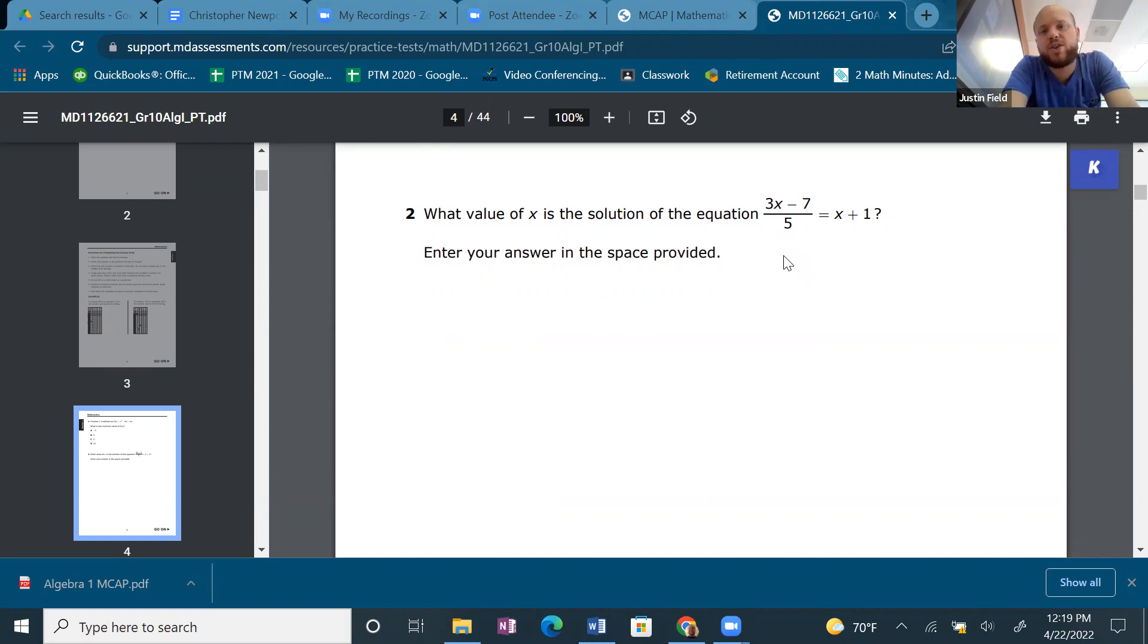What value of x is the solution of the equation? Enter your answer in the space provided. Okay, will do. So this one, first thing I thought when I saw it was we better multiply by 5 and get that 5 out of the denominator. So anytime you have a denominator, multiply by it and it's gone. And then we can distribute.